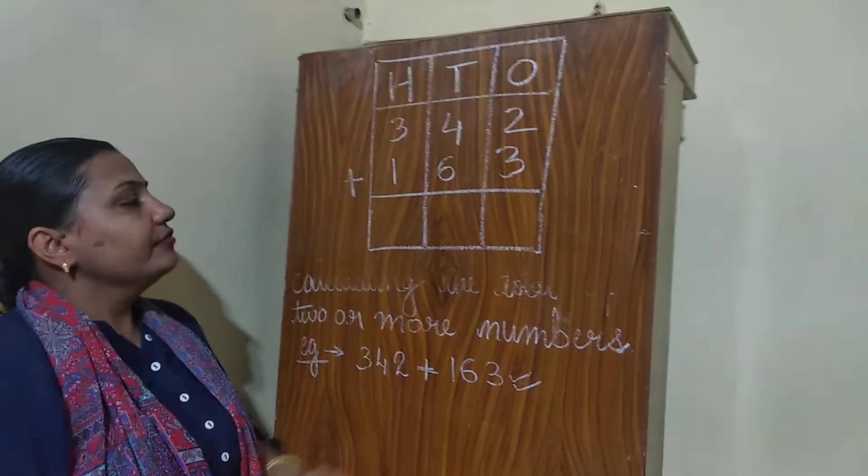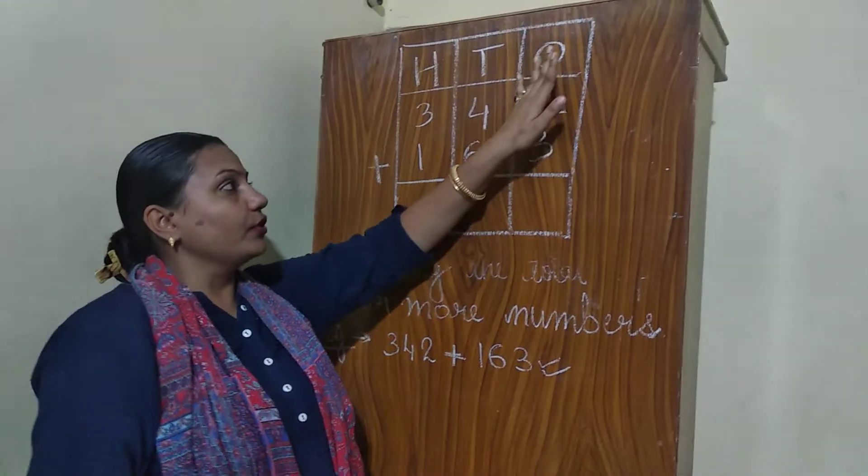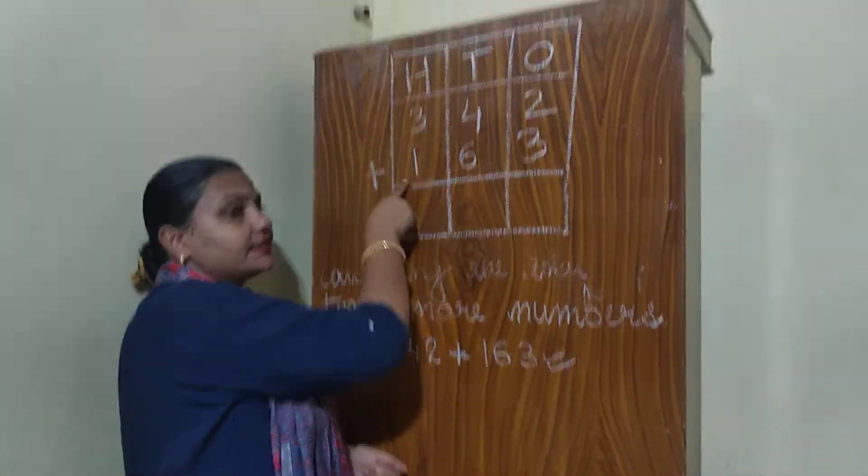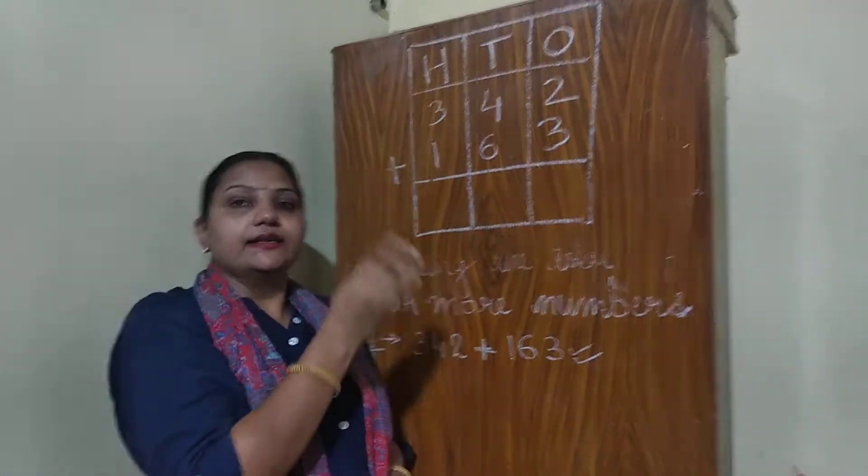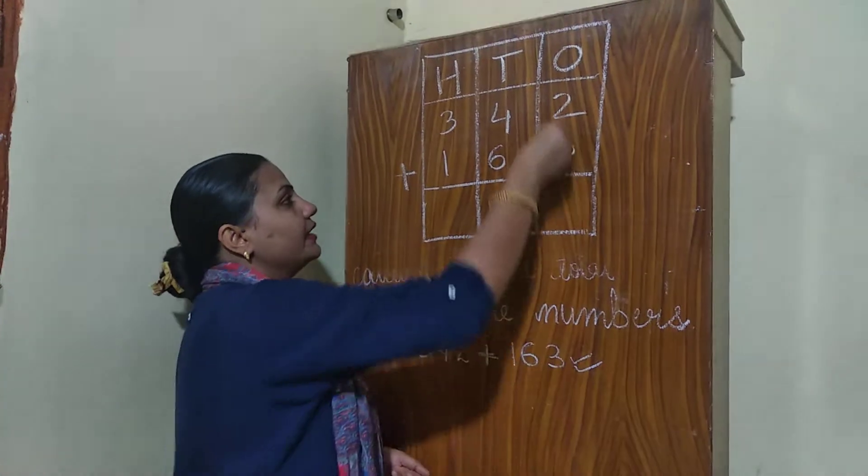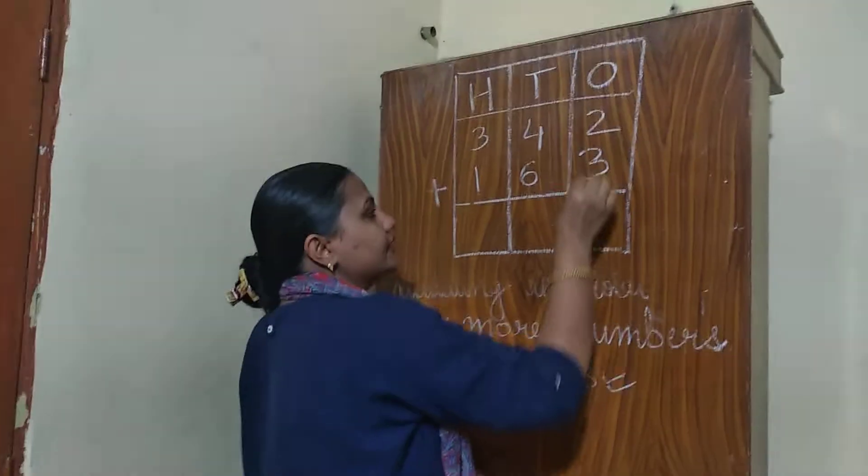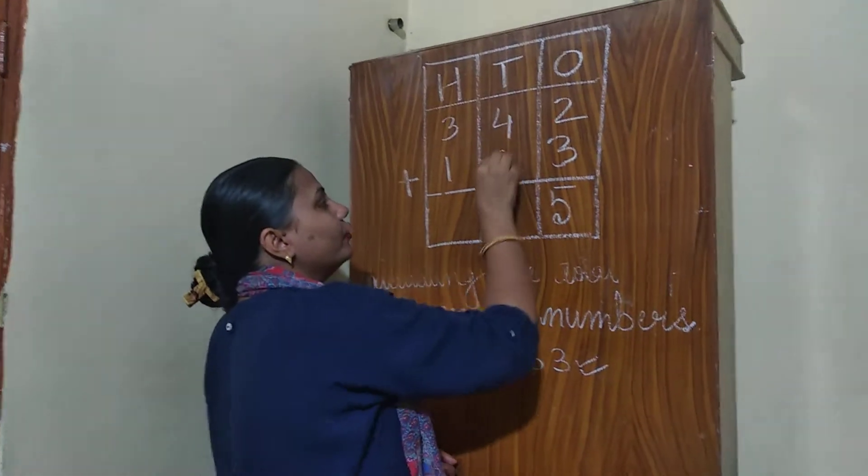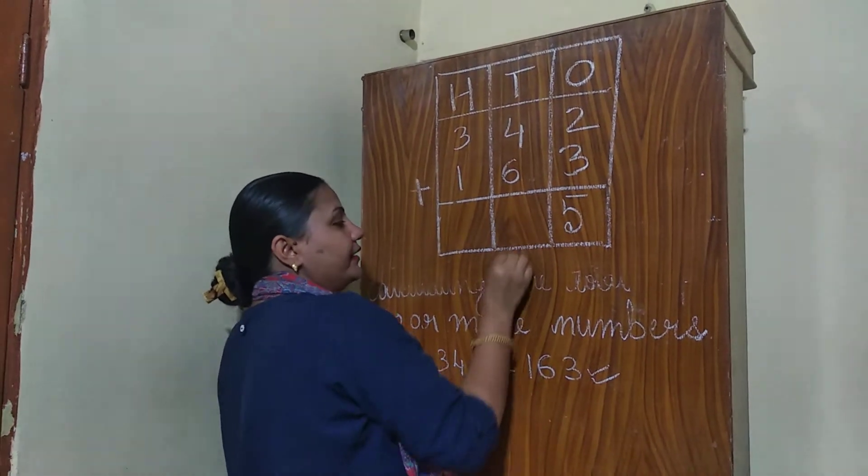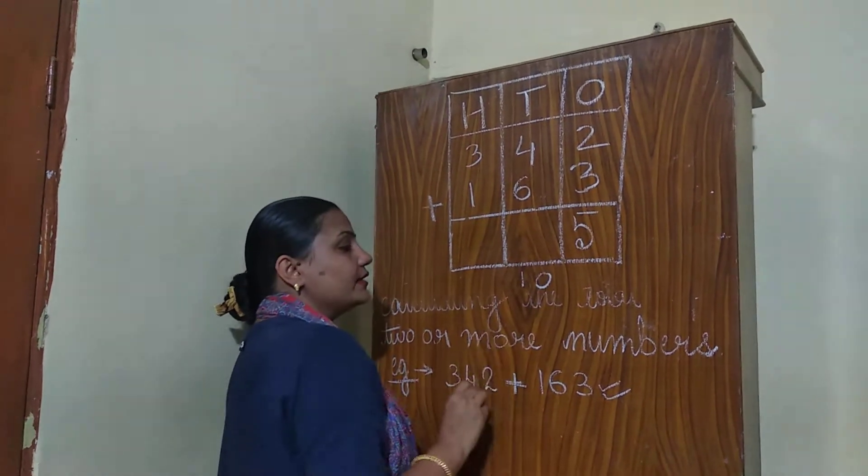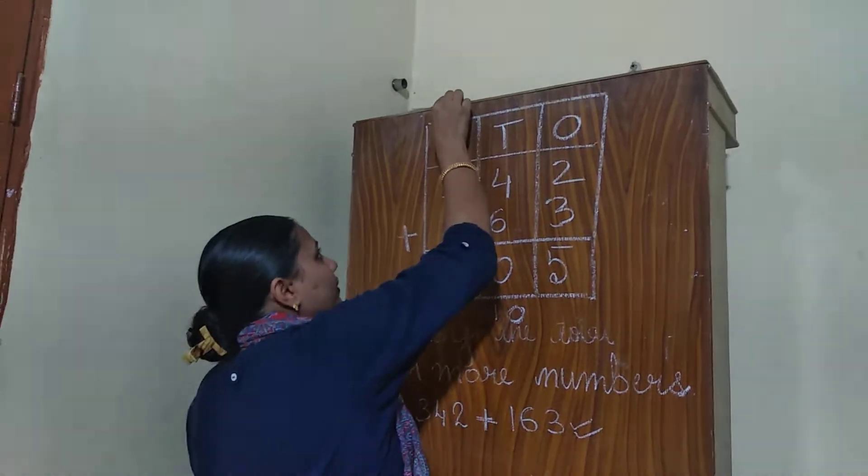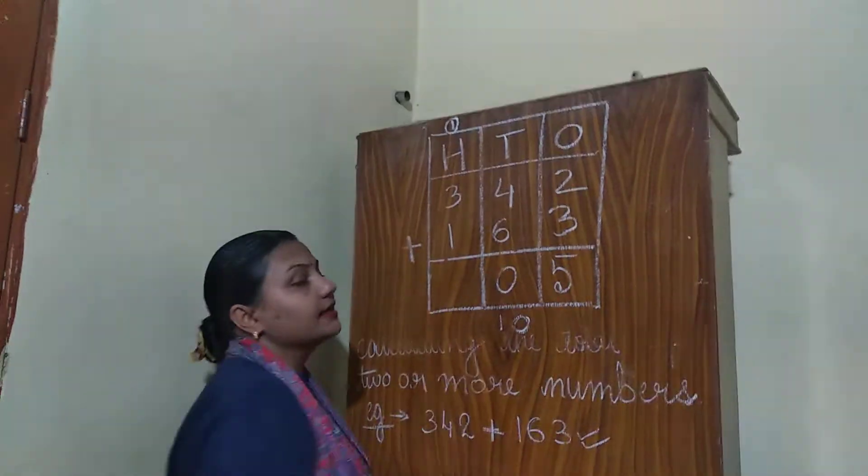First step is, we will start the addition process from 1's place, then 10's place, then 100's place, then 1000's place and so on. So first we will add 1's place that is 2 plus 3 and that is 5. Then 10's place, 4 plus 6 that is 10, but we will write 0 here and this 1 will go to next place,